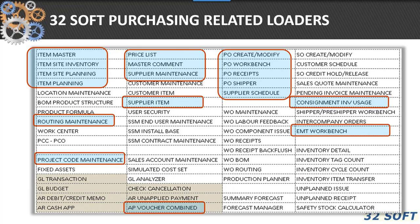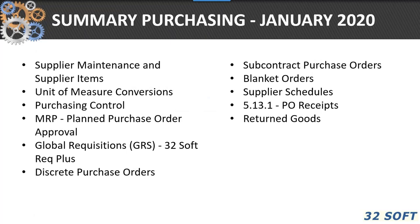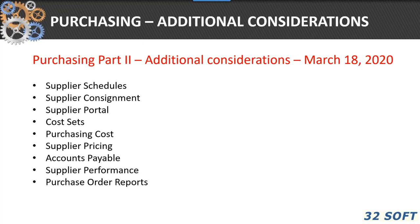32Soft has a number of related loaders associated with purchasing: supplier item loads and the PIA workbench. Contact Alex, Denise, or me if you want any information about that. So today we've talked about suppliers, items, conversions, purchase control, a little bit about MRP, some detail about requisitions, discrete purchase orders, subcontract, blanket orders, and receipts. Next month we're going to talk about our second inventory control webinar. And then in March on the 18th, I'll come back and we'll talk about supplier schedules, consignment, cost sets, supplier pricing, a little bit of grants receivable, and supplier performance.